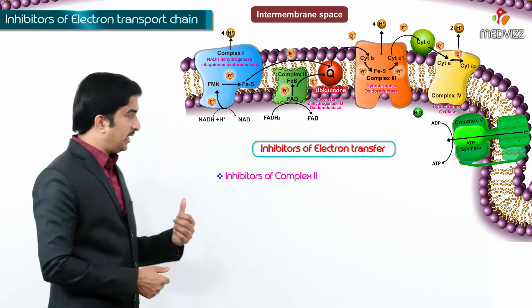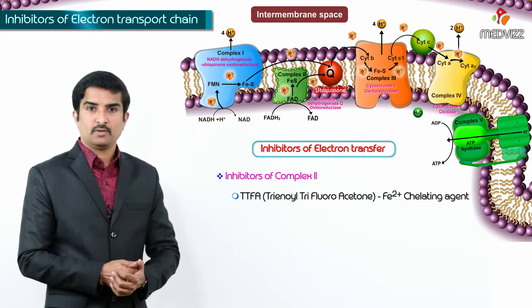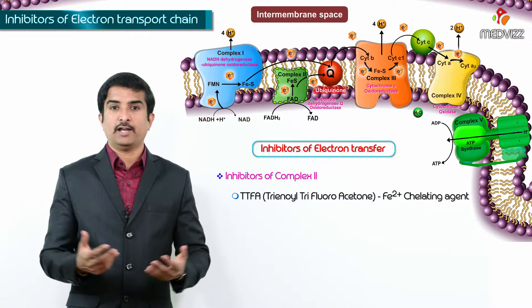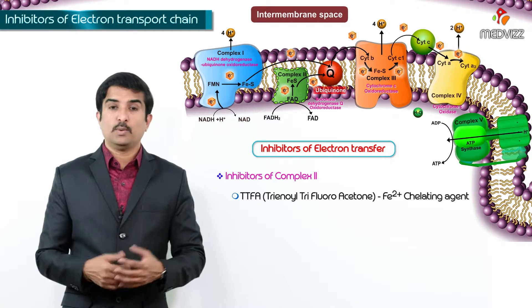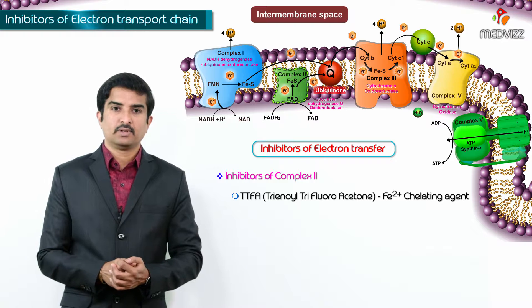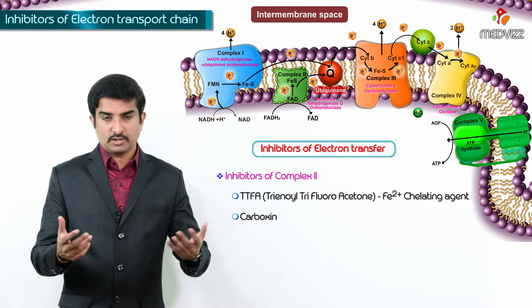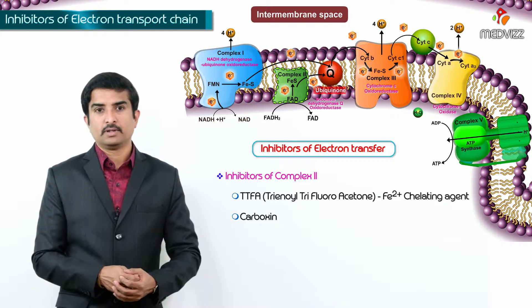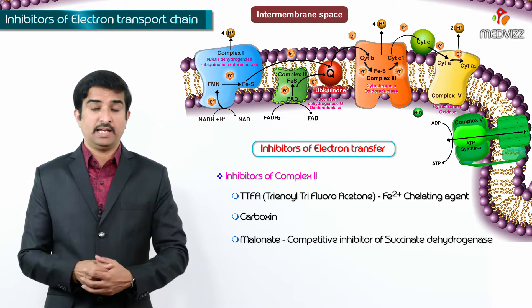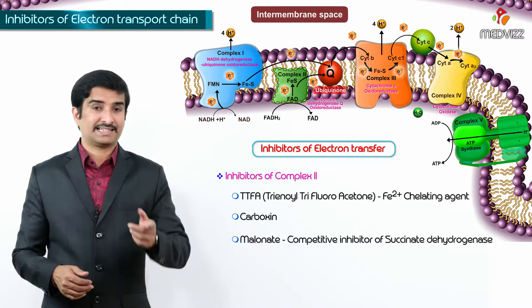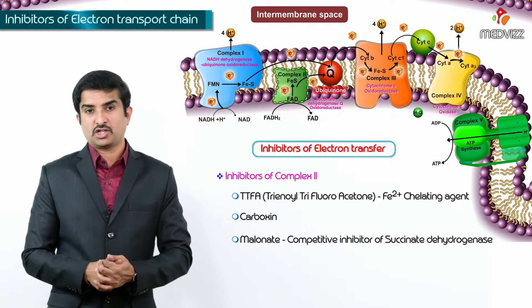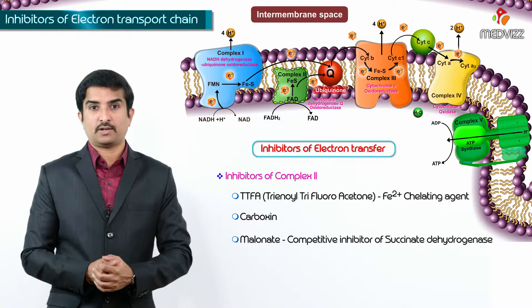The inhibitors of Complex II are: TTFA (thenoyltrifluoroacetone), which is an iron chelating agent; carboxin; and malonate, which is a competitive inhibitor of succinate dehydrogenase. All three inhibit Complex II of the electron transport chain.